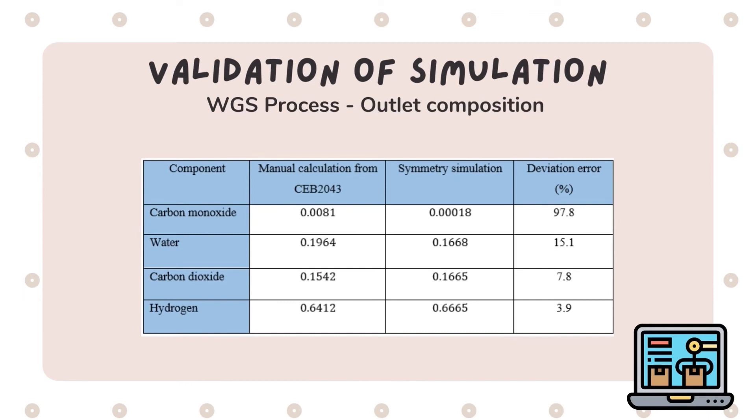Lastly, in outlet composition for WGS reactor, the deviation error calculated for carbon monoxide, water, carbon dioxide and hydrogen is 97.8%, 15.1%, 7.8% and 3.9% respectively.